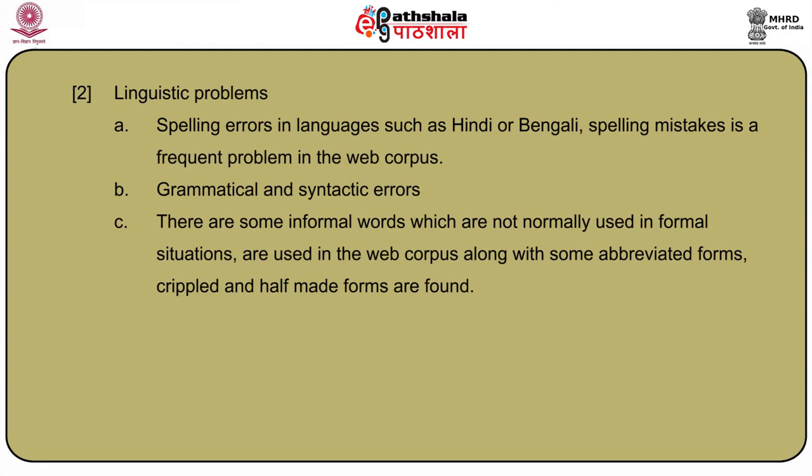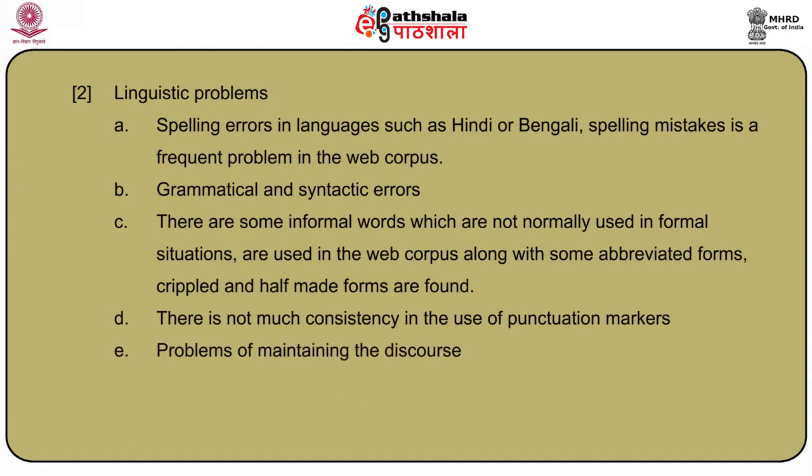Those forms are taken into the corpus but errors are normally removed. There are also punctuation errors — there is not much consistency in use of punctuation markers. Repetitive use of question marks, exclamation marks, commas, dots or ellipses is very frequently found in web corpus text. We were careful to remove those errors to normalize the text. There are also problems of maintaining discourse — sometimes a sentence belonging to one domain has been shifted to another domain, so overlap of discourse is a very common problem in web text corpus.